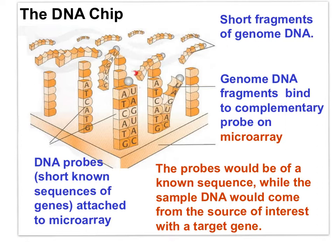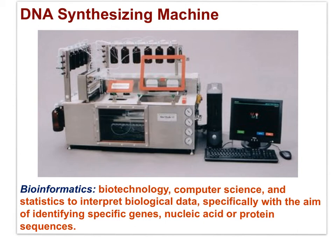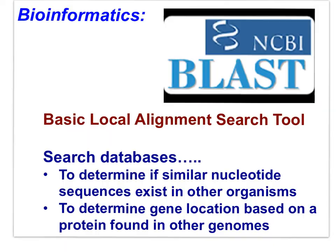The genome containing the target gene would wash over the microarray of probes; the target gene would bind to a probe, and an analysis of the fragments bound to the known sequences on the probes would help isolate the target gene. If the base sequence of the target gene is known, the gene can be synthesized using a machine — you can see the containers of solutions with different bases.